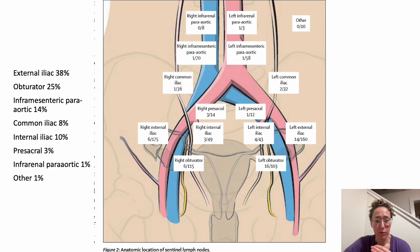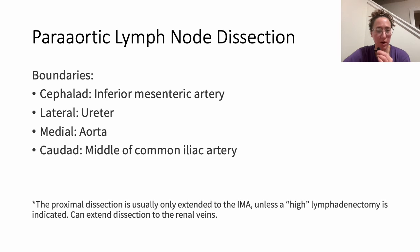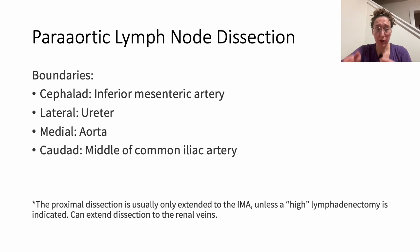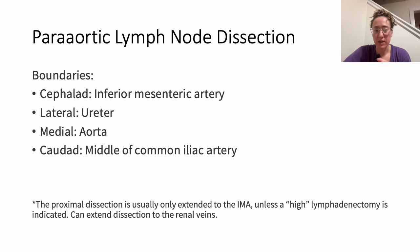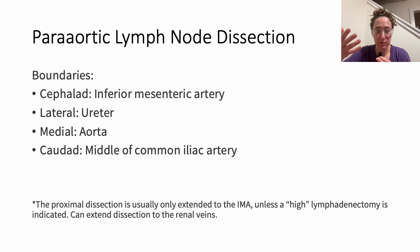Those are the borders — let's move on to the periaortic lymph node dissection. Boundaries for periaortic: cephalad is the IMA, laterally you'll have your ureters, medially you'll have the aorta or the inferior vena cava, and caudad is the middle of the common iliac artery. The proximal dissection is usually only extended to the IMA unless you need to do a high lymphadenectomy, in which case you would go up to the renal veins.